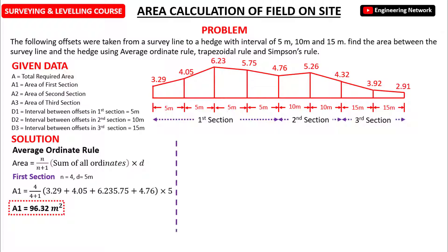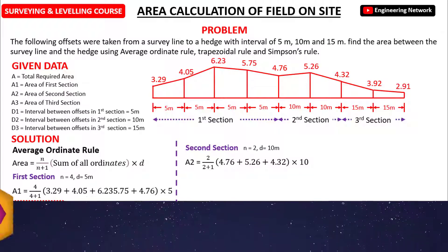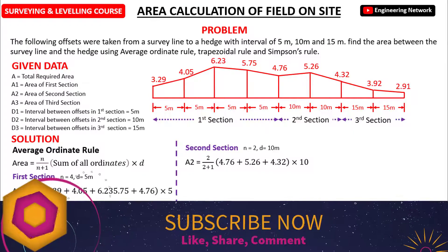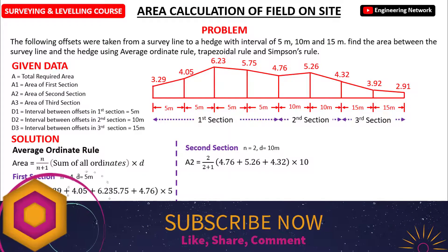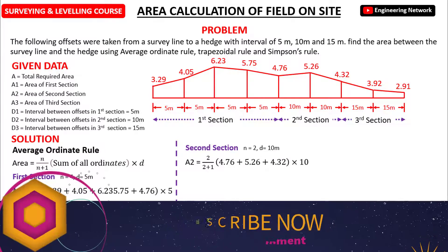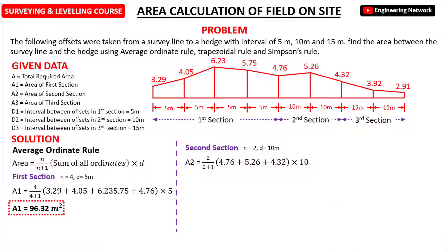Similarly, for the second section with interval 10m, we have two number of offsets, so A2 equals 2 divided by (2+1) into the sum of all ordinates of the second section multiplied by 10. After calculation, the area for the second section is 95.6 square meters.